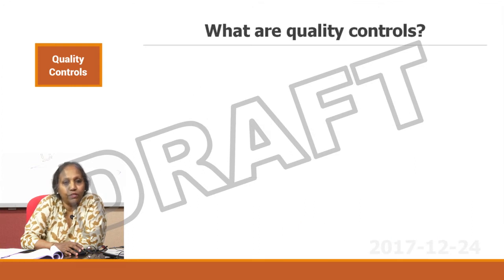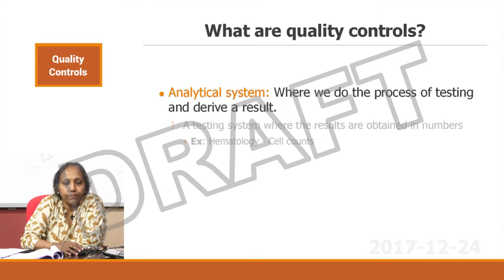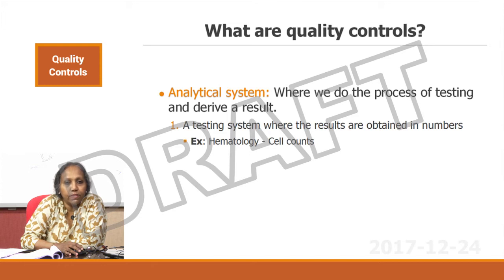What do you know about quality controls? What are quality controls? Before we ask that question, we need to know about analytical systems. An analytical system is where we do the process of testing and derive a result. It can be a testing system where the results are obtained in numbers, for example by chemistry and hematology cell counts where you get discrete numbers as your results.